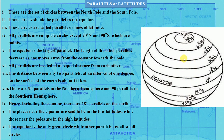The distance between any two parallels at an interval of one degree on the surface of the earth is about 111 kilometers. You must be thinking that these lines are actually drawn on the earth and are quite visible — no, they are not. These lines are imaginary.